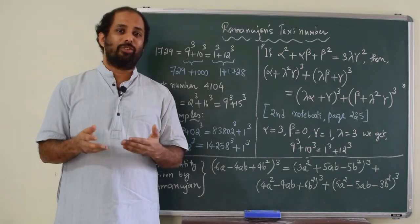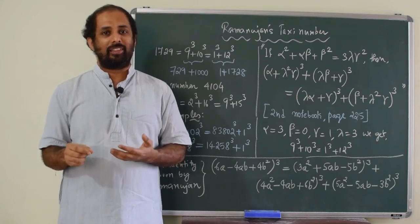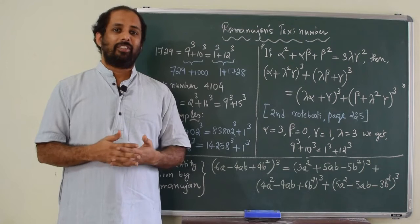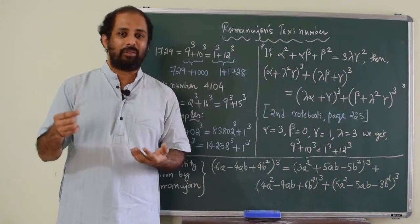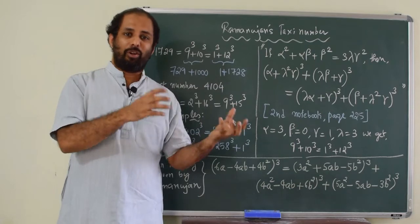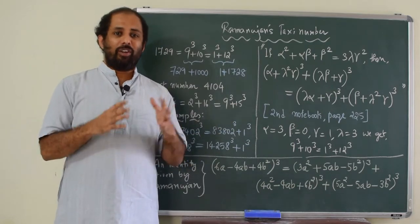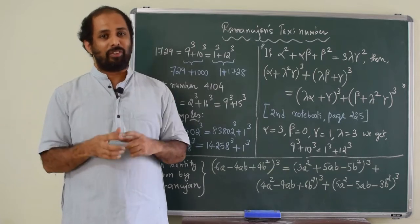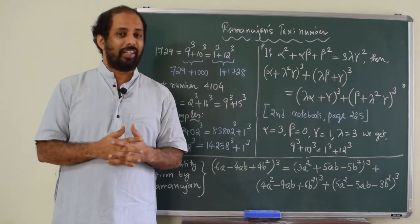Ramanujan only recollected the property he knew years ago. So, when he was in India, he used to write some important results in a notebook. We know Ramanujan notebooks, very famous. So, he used to work rigorously in a slate and whenever he used to get some important results, he used to copy it to his notebooks. And one of his notebooks had this property. He had mentioned about the number 1729 long, long back, when he was in India.